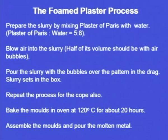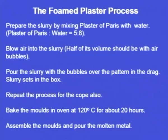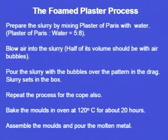The second type of plaster moulding is the formed plaster process, which is an improved version of the conventional plaster moulding process. The major drawback of the conventional process is very poor permeability, causing gas defects. In this improved process we make an attempt to improve the permeability of the mould.